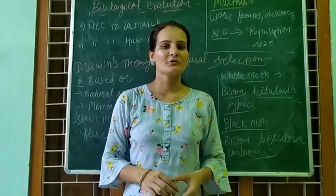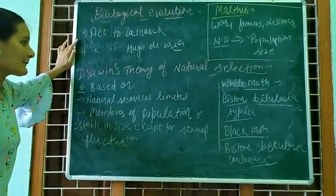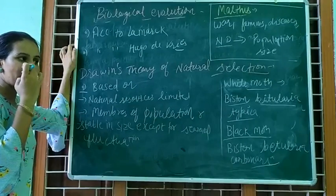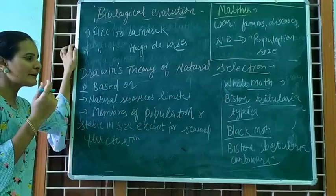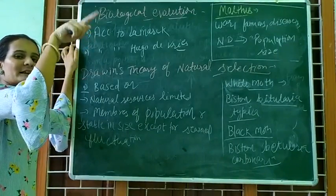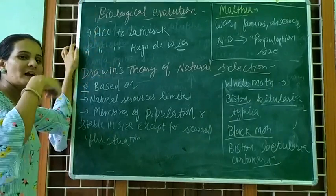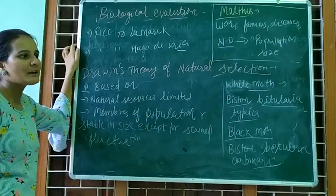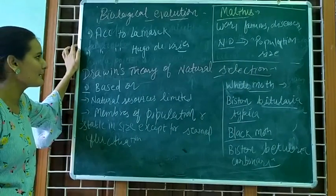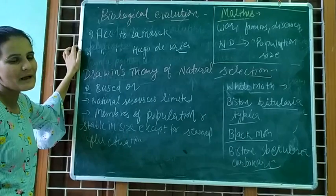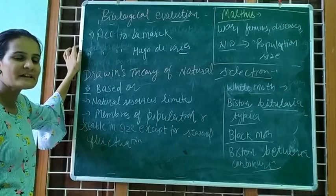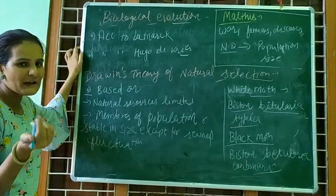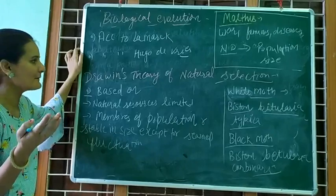Now let's talk about biological evolution. What is the evolution of organs? For example, consider the giraffe. One scientist, Hugo de Vries, says that if there is mutation in a gene, what happens in evolution? Mutation is a sudden change in DNA sequence.